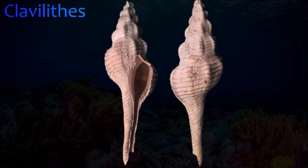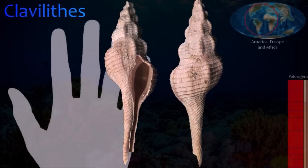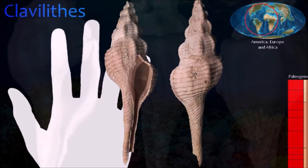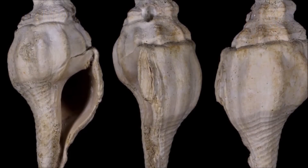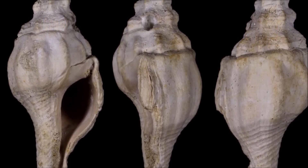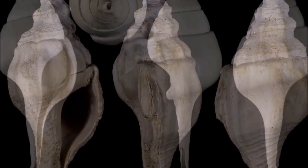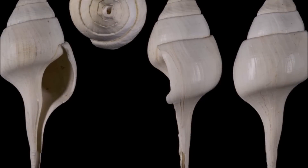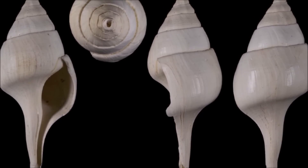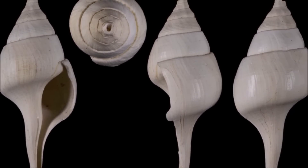Clavalits was a stout gastropod with a large shell that had flat-sided whorls that barely overlapped each other. The whorl suture, where one whorl joined the next, was distinctly stepped, and the outside of the shell was covered with growth lines. The shell opening was large and oval in shape. Comparisons with modern related forms suggest that it was carnivorous.